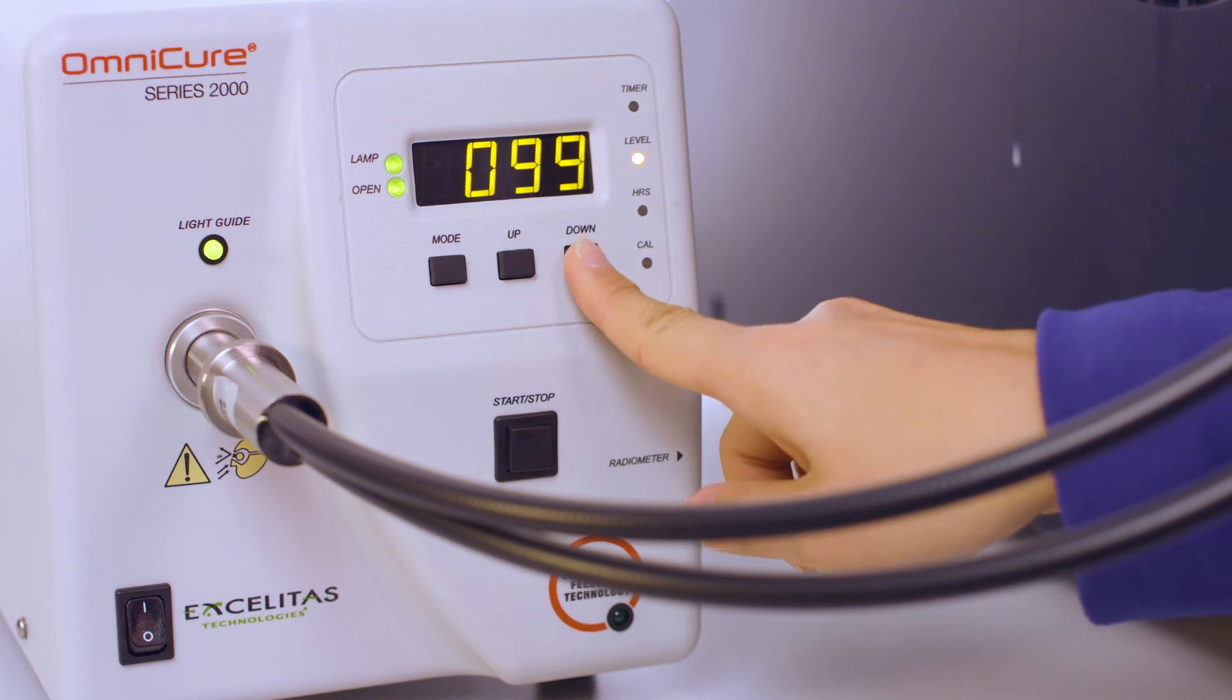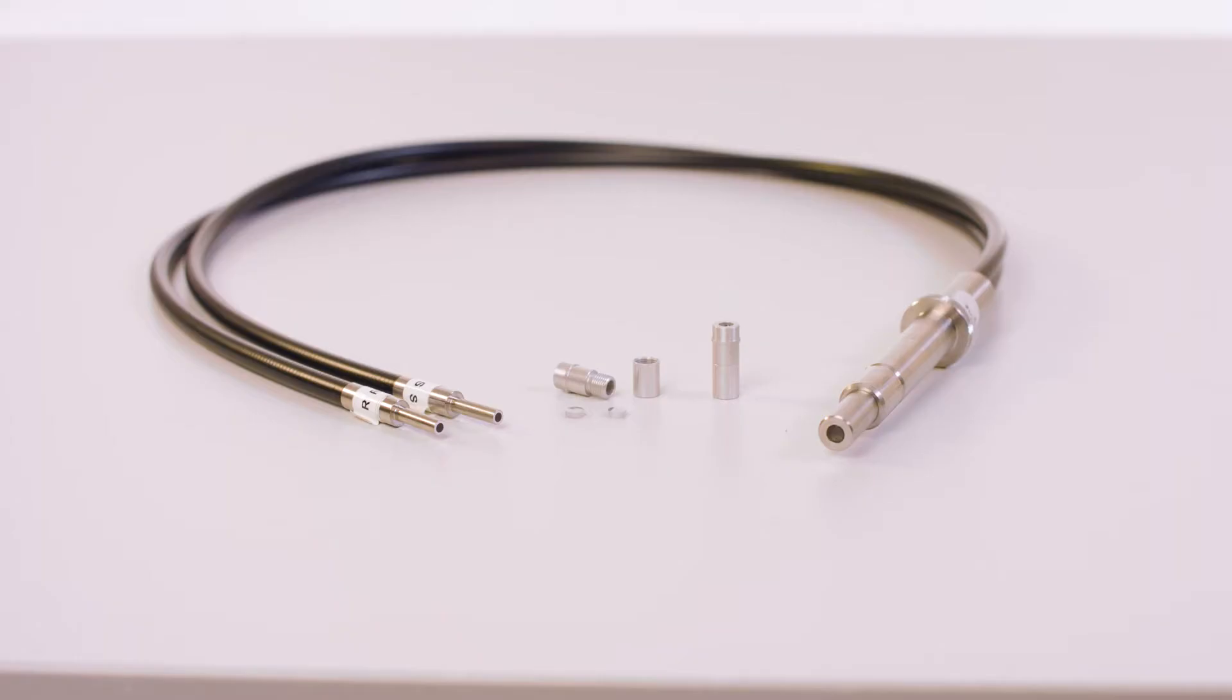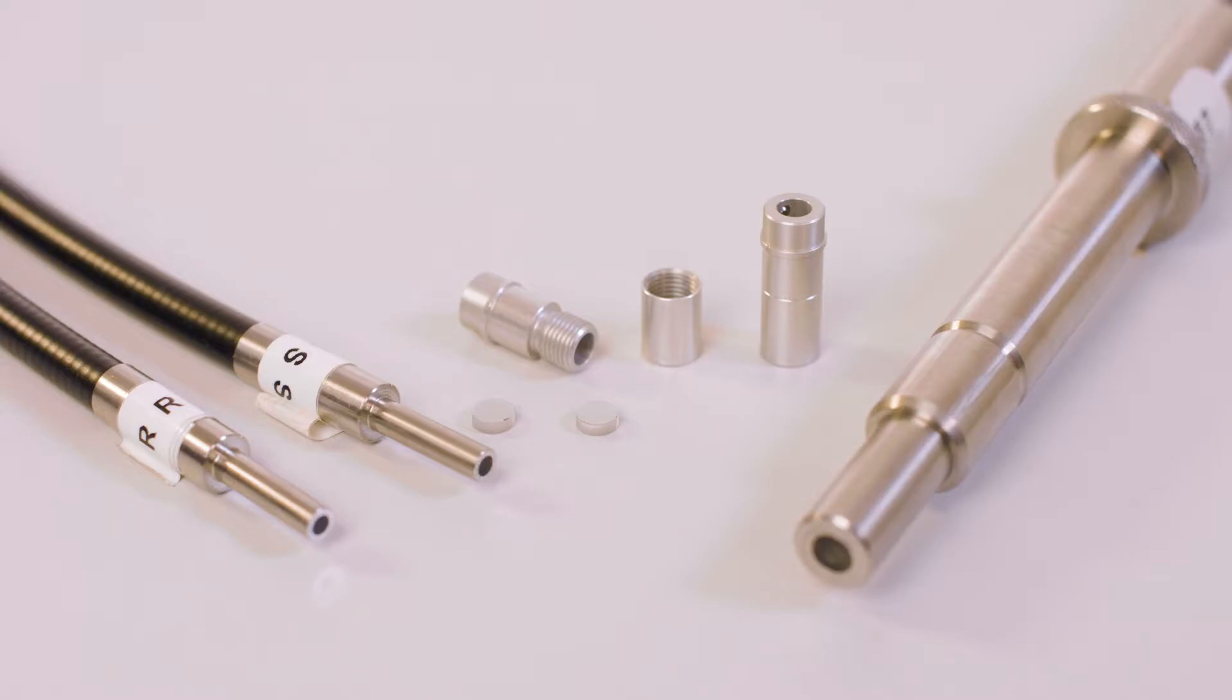The intensity reaching the DSC cell is adjusted using a combination of aperture control at the PCA unit and neutral density and/or cutoff filter at the end of the light guide.